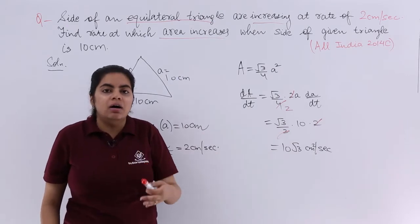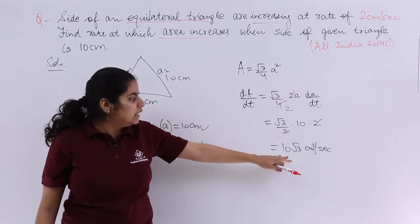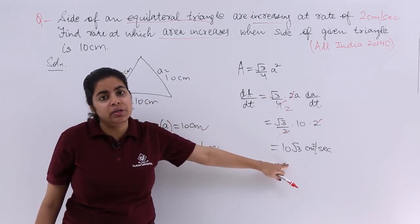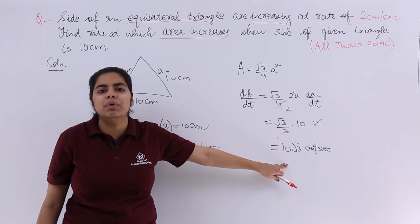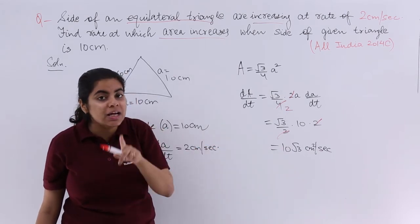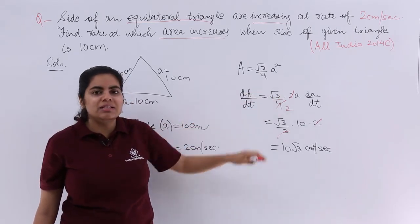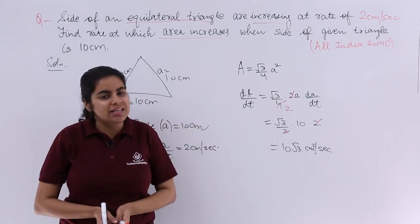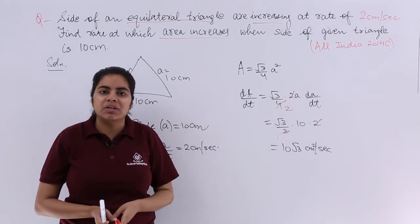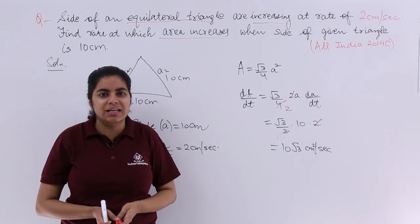Now what mistake you can do? You can find definitely the answer that is 10 root 3, but people would write cm per second. Please don't make that mistake. You need to get full marks. dA, A means the area, so it has to be square units. That is why this is the answer: 10 root 3 cm² per second.